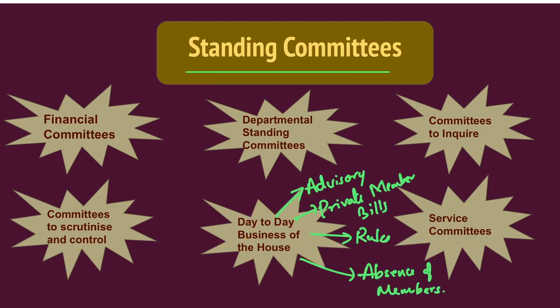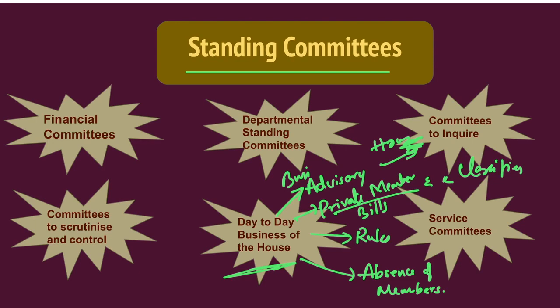Committees relating to the day-to-day business of the house include the Business Advisory Committee, which regulates the programs and timetable of the house and allocates time for legislative and other government business. The Committee on Private Members' Bills and Resolutions classifies bills and allocates time for discussion on bills and resolutions introduced by private members; it is a special committee of Lok Sabha consisting of 15 members, including the Deputy Speaker as its chairman.